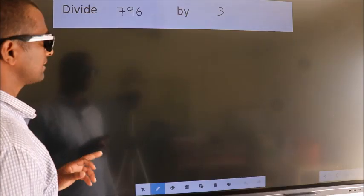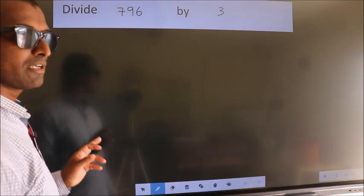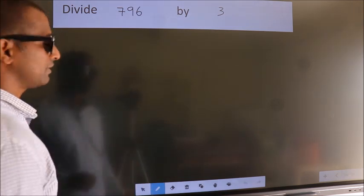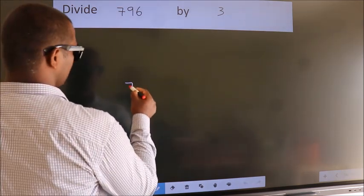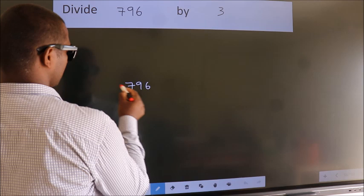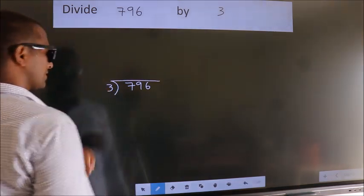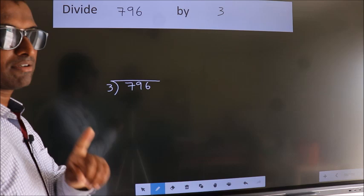Divide 796 by 3. To do this division, we should frame it in this way: 796 here, 3 here. This is your step 1.